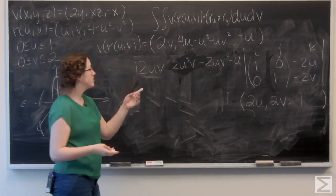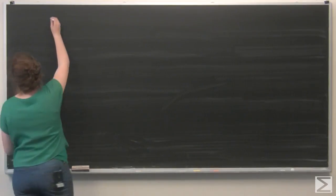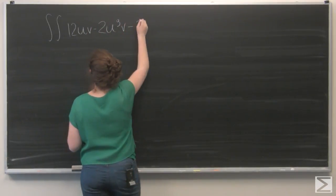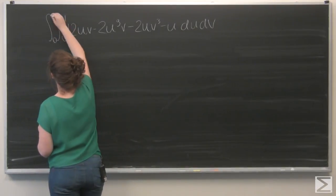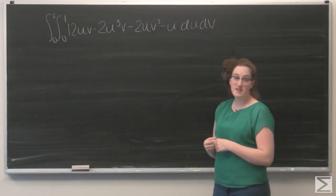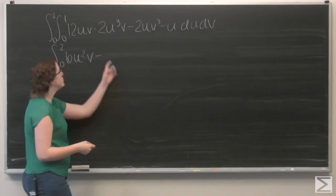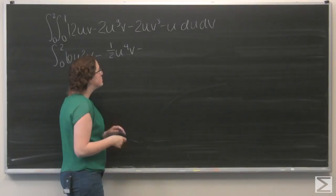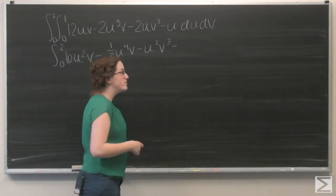And now, I'm ready to integrate this over u and v, which is 0 to 1 and 0 to 2, respectively. I'm going to move over to the other board to complete that integral. So, just set everything up, and now, let's integrate with respect to u. So, 12uv becomes 6u squared v. And 2u cubed v becomes 1 half u to the fourth v. And 2uv cubed becomes u squared v cubed. And a negative u becomes negative 1 half u squared.